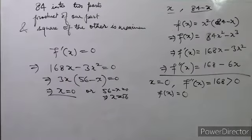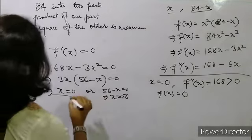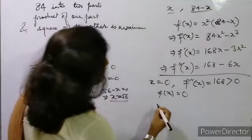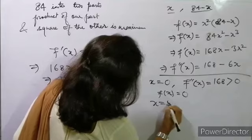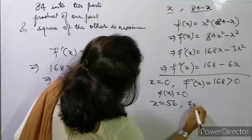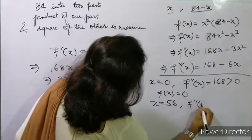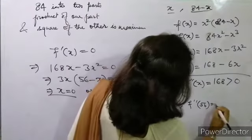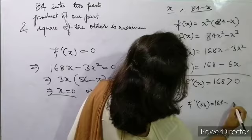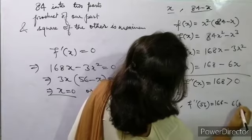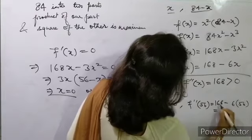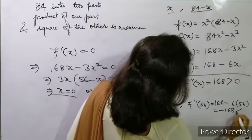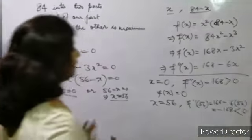Now for x = 56: f''(56) = 168 - 6×56 = 168 - 336 = -168. Since -168 is less than 0, x = 56 gives a maximum.